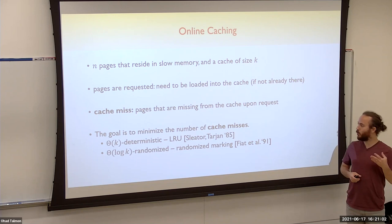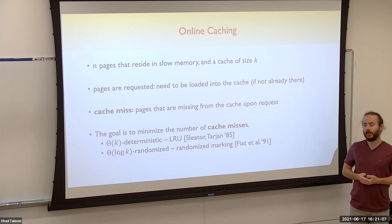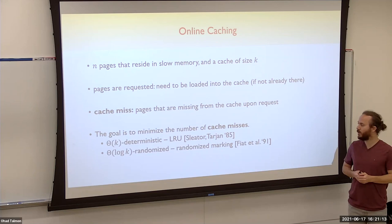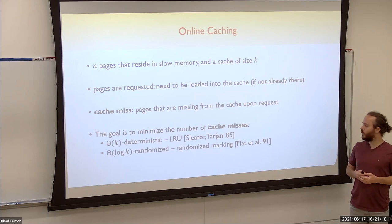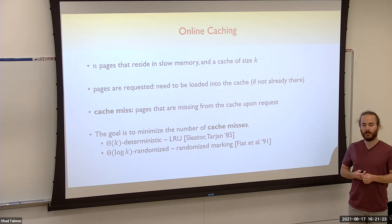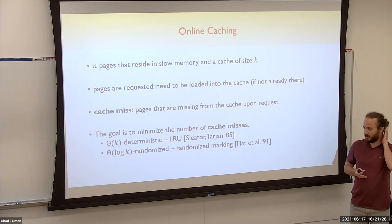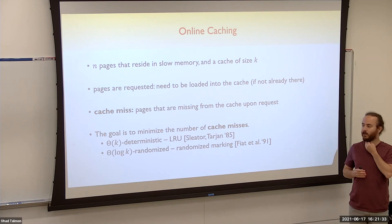We want to minimize the number of cache misses. The LRU algorithm, for instance, is an online algorithm for the problem that obtains a competitive ratio of order k, as shown by Sleator and Tarjan. A randomized marking algorithm was shown to give a competitive ratio of order log k for randomized algorithms.